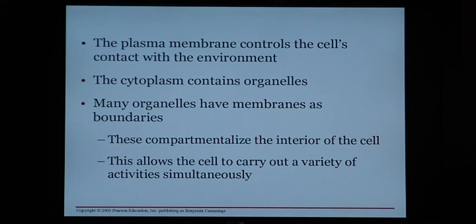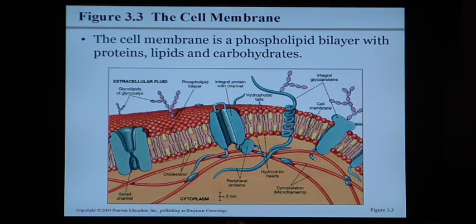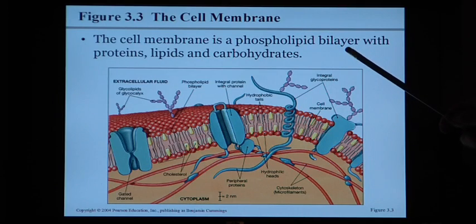The cell is filled with cytoplasm, and the cytoplasm contains organelles — those organelles have membranes that surround them as well, making the inside of the cell very neat, tidy, and compartmentalized. The cell membrane or plasma membrane is made up of what's called a phospholipid bilayer.